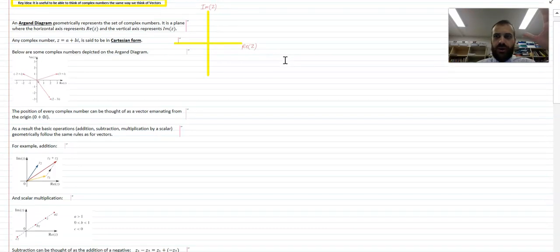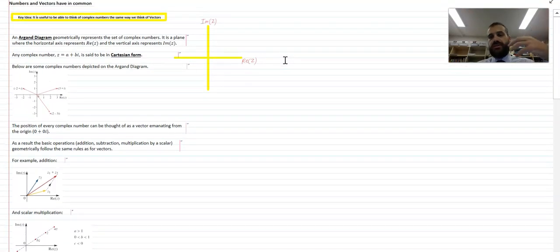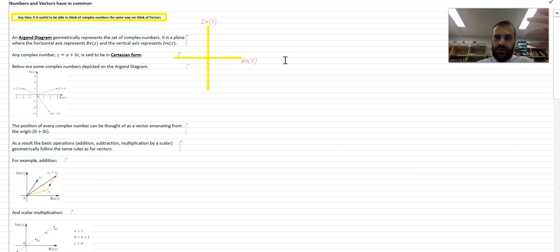And you should see a complex number and you should see it in your mind on an Argand diagram, the same way when you hear a vector or see a vector written down, you see it as an arrow on a Cartesian plane.